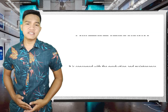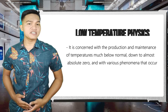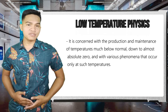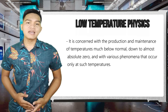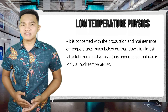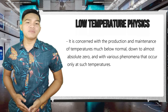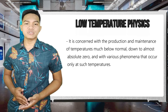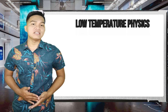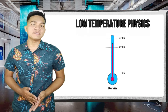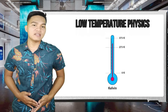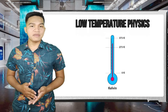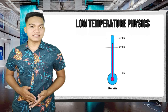Low-temperature physics is a branch of physics concerned with the production and maintenance of temperatures much below normal, down to almost absolute zero, and with various phenomena that occur only at such temperatures. The temperature scale used in low-temperature physics is the Kelvin temperature scale, or absolute temperature scale, which is based on the behavior of an idealized gas.